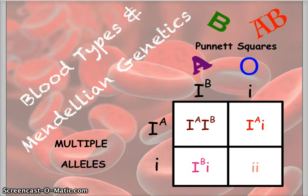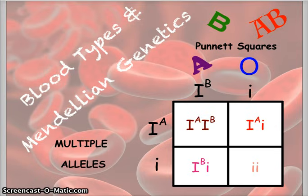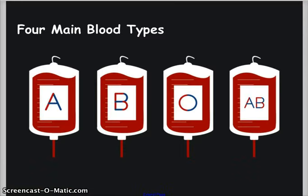Let's look at another situation for Mendelian genetics — we're going to look at blood types in human beings. This is again a multiple allele situation and we're going to look at how to use Punnett squares to check for which blood type is possible based on the parents. There are four blood types: A, B, O, and AB.